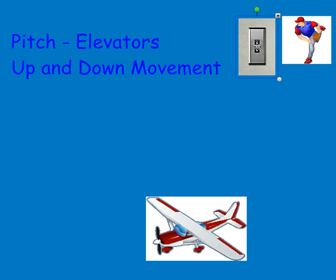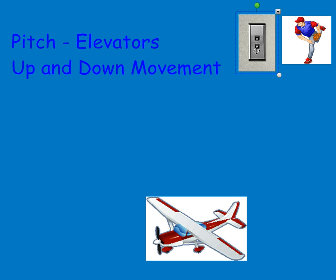In real life, if I press the up button on an elevator, my elevator will go up. If I press the down button, the elevator will go down. Well, the same thing holds true in an airplane. It also has an elevator, and the elevators are located right back here — this section — those are the elevators, and they're located on the horizontal stabilizer, which is right here.